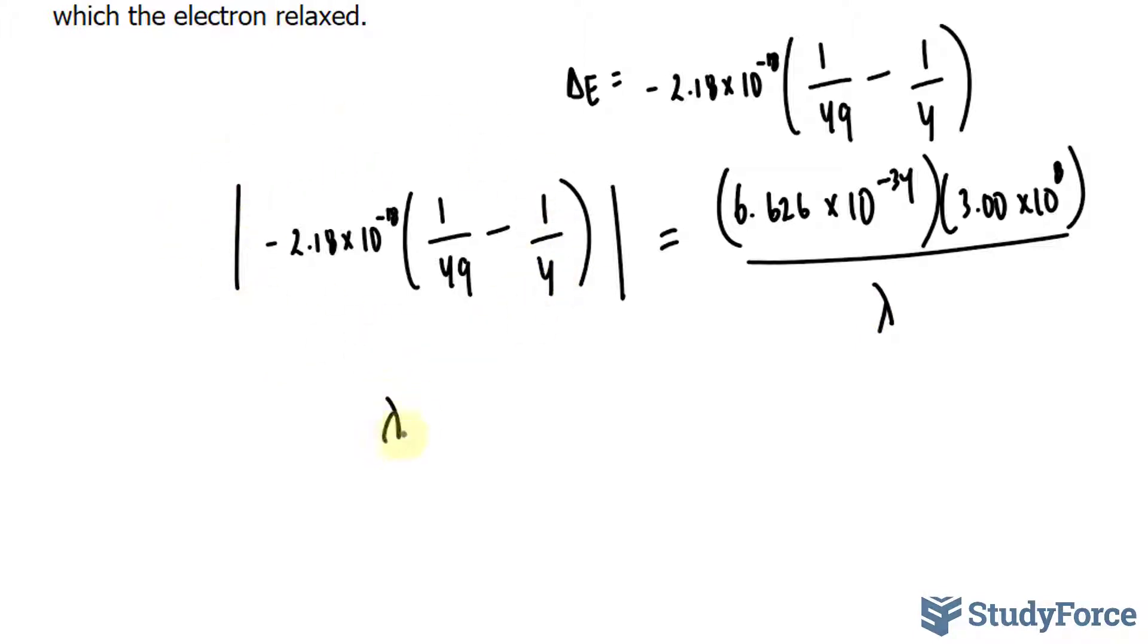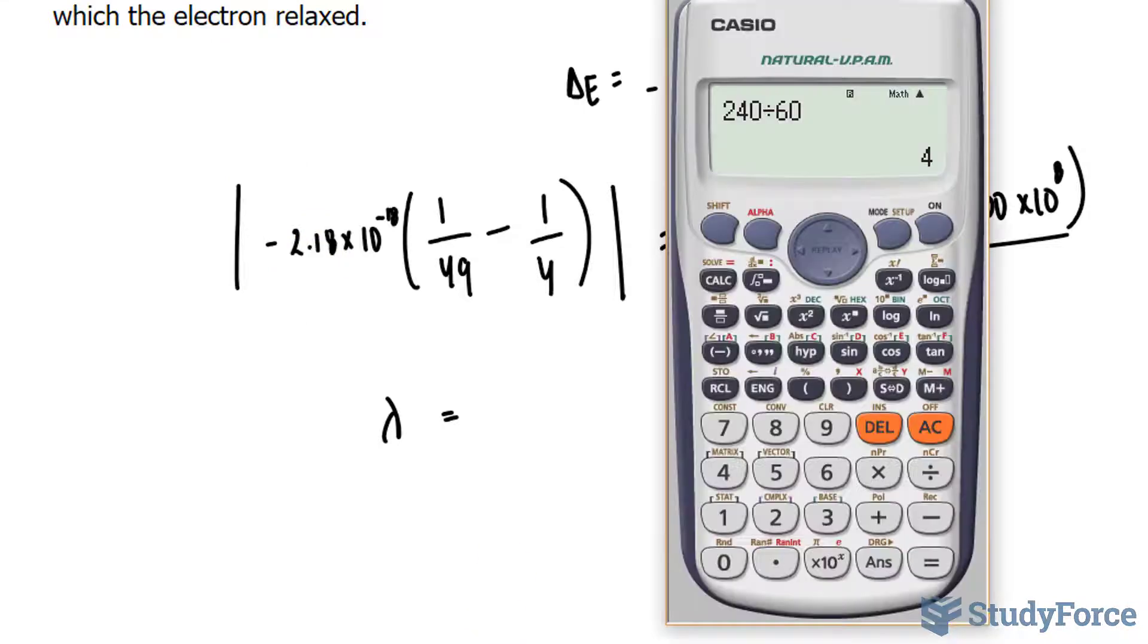We should end up with lambda equals the top part stays the same, divided by this. I'm going to go ahead and find out what that is equal to, and show you what these absolute values do to that number.